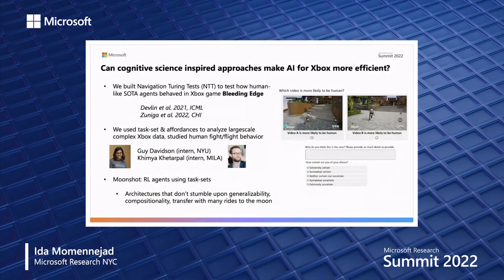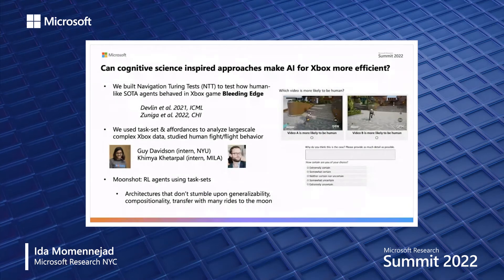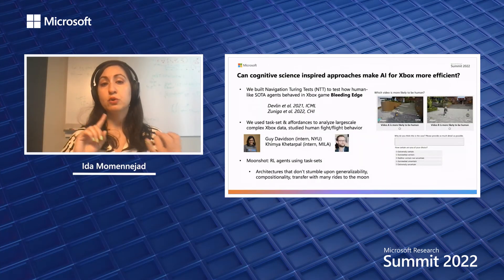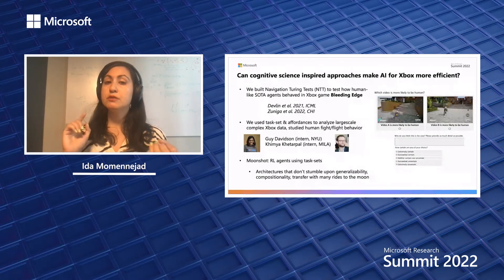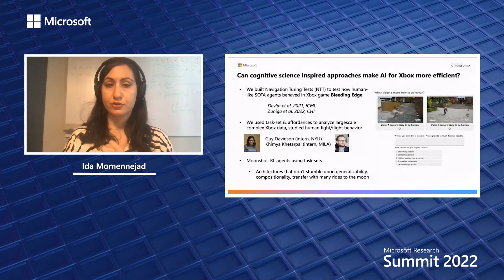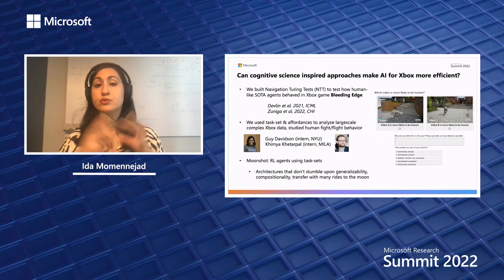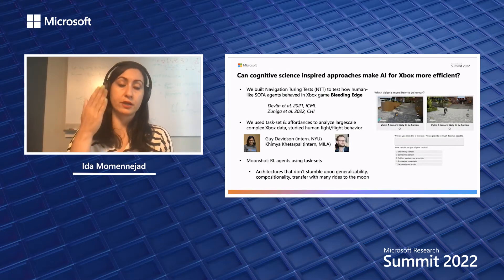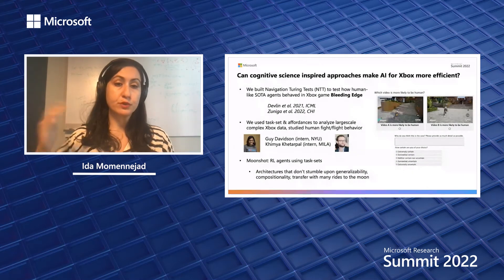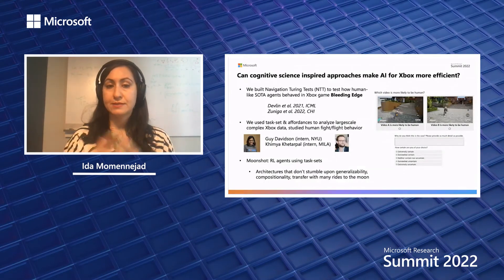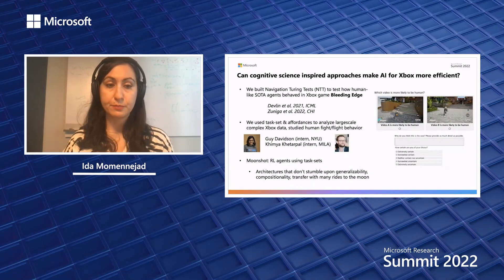In the past two internship cycles, we worked with Kimia Ketarpal and Guy Davidson on using concepts in cognitive science such as task sets and affordances to analyze large-scale complex Xbox data, showing not only more efficient analysis of human behavior but also a more interpretable approach. Our moonshot is to design AI or RL agents that use task sets instead of simple policies — which are sequences of actions — or options, but tasks that allow for generalizability and interpretability.